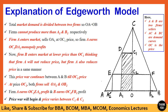Now firm B enters the market at a lower price than OC1, assuming that firm A will not reduce its price. After this, firm A also reduces its price in a similar manner as B did. So a price war begins between firms A and B. This price war will continue until the price reaches OC2.